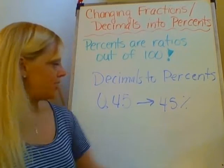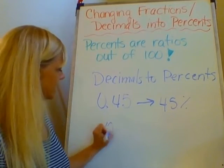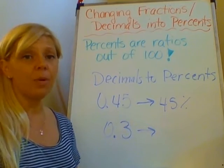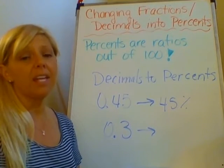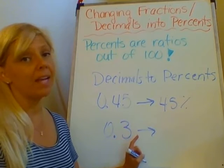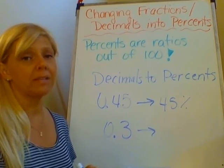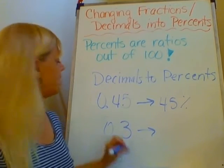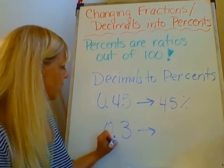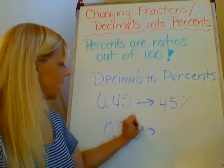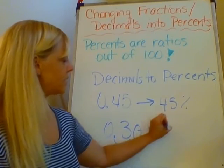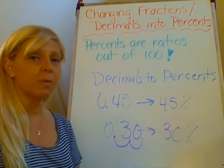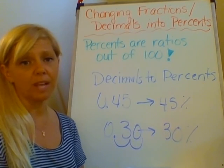What about if I just had 3 tenths, 0.3? Again, I need to move the decimal point two places. Since I don't have two places here, I can annex a zero — we learned about annexing zeros when we divided and multiplied decimals. So I'll move it over once, annex a zero, and move it twice. This would become 30%. And that is how you change a decimal to a percent and a fraction to a percent.